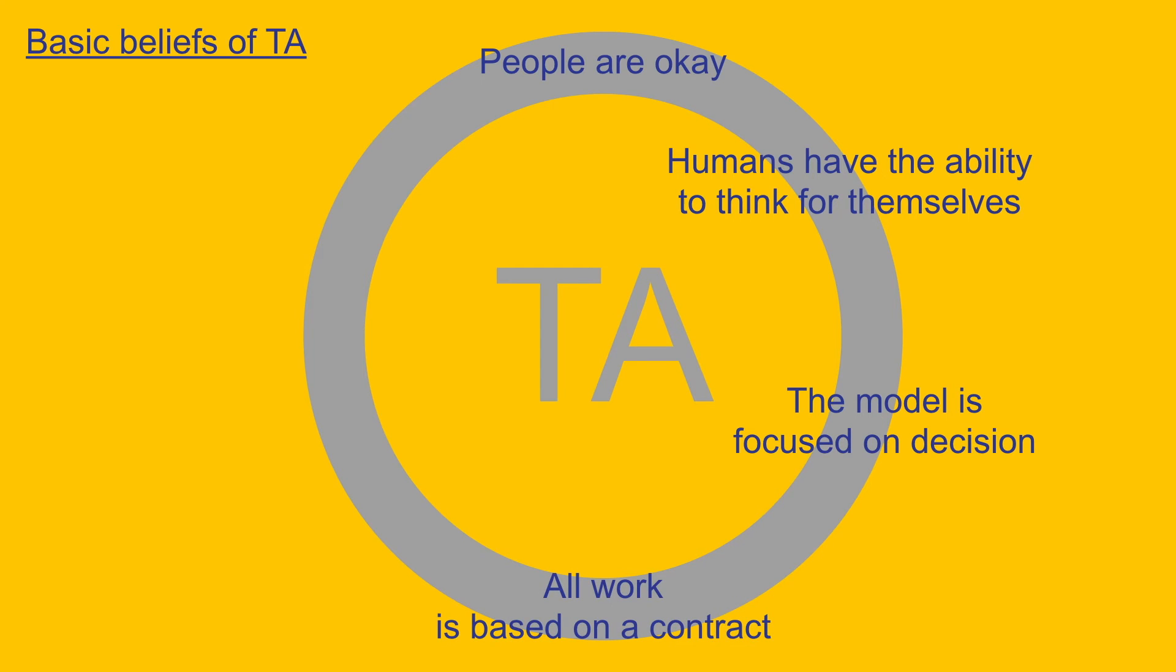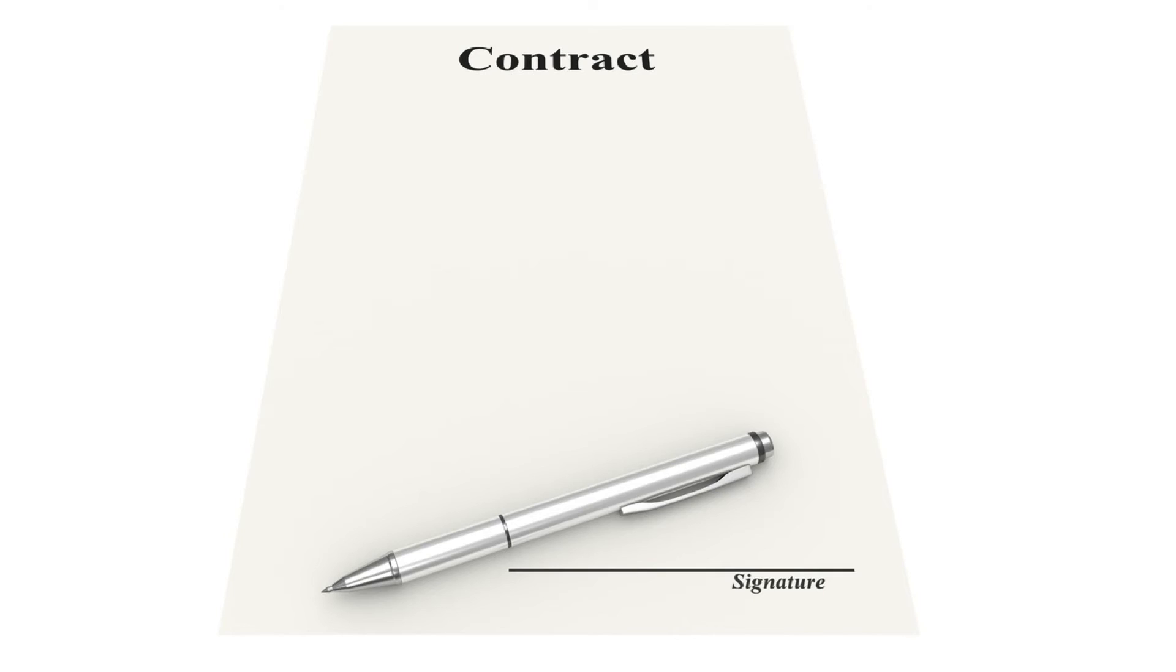Change needs an active re-decision and the resulting new actions. Every work is based on a contract. If two people are working together, professionally or privately, they are both responsible for the success of their work. A contract clarifies the responsibilities, obligations and boundaries.